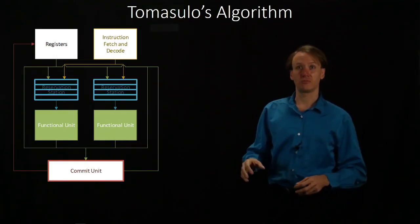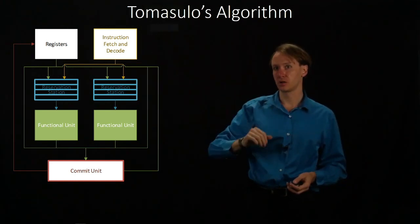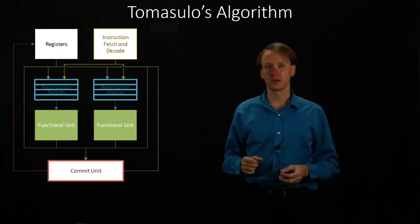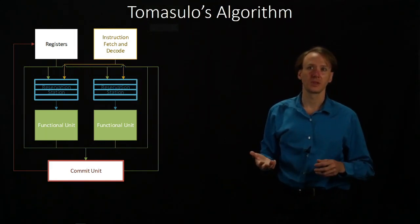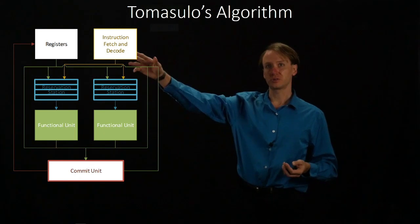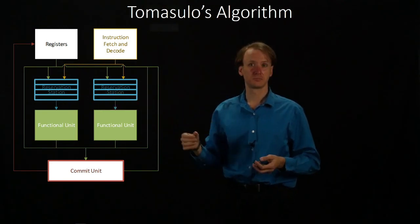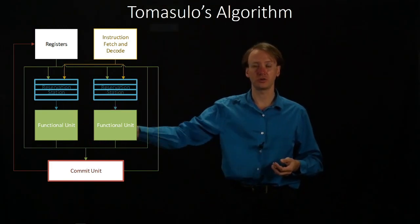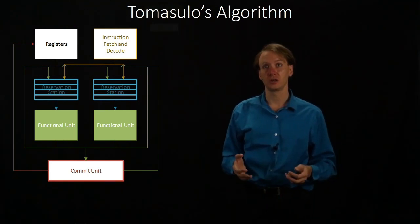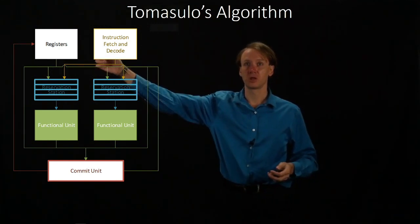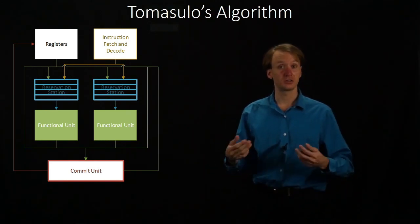This is a generic diagram for how Tomasulo's algorithm works. We have our common instruction fetch and decode hardware, our commit unit, and two functional units. There's also a block of registers. When an instruction comes in from the fetch/decode hardware, it's going to be sent to one of the two sets of reservation stations depending on which functional unit it needs. If you already have all the parameters your instruction needs, you can pull them from the registers, put that information into the reservation station, and the functional unit can run your instruction as soon as it's available.